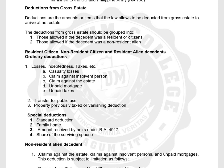The deductions from the gross estate should be grouped into allowed deductions for RC, NRC, and RA, and those allowed deductions for non-resident alien. The deductions are divided into two: ordinary deductions and special deductions. Ordinary deductions include losses, indebtedness taxes, casualty losses, claims against insolvent persons, claims against the estate, unpaid mortgage, unpaid taxes, transfer for public use, and property previously taxed or vanishing deduction. Special deductions include standard deduction, family home, amounts received under RA 4917, and share of the surviving spouse.